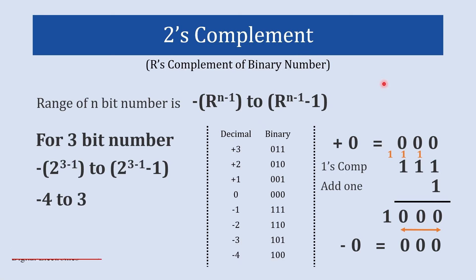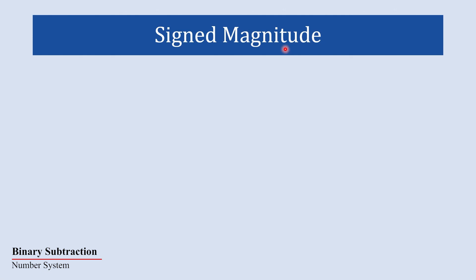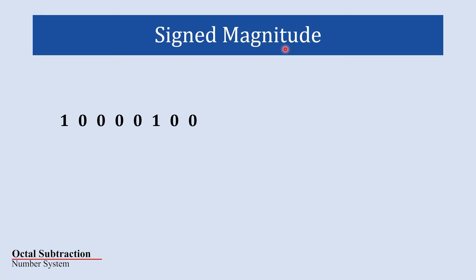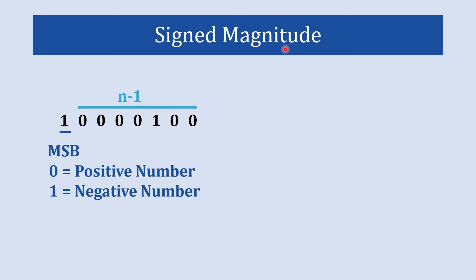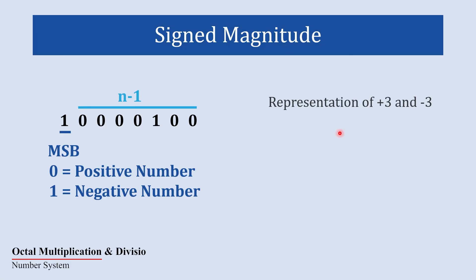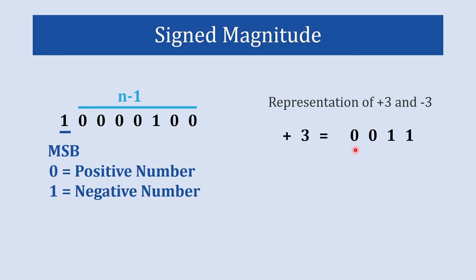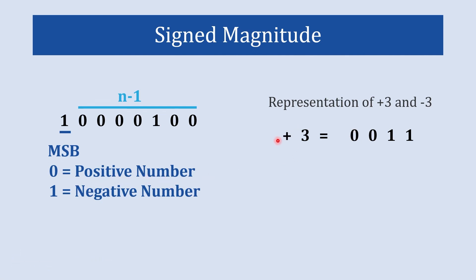This is the advantage of representing signed binary numbers using the 2's complement method, and this is the reason why 2's complement is preferred over 1's complement. Now the third method to represent signed binary numbers is the sign magnitude method. Here the sign of the number is represented using the MSB: 0 for positive and 1 for negative. The remaining n minus 1 digits represent the magnitude. For example, in a 4-bit representation positive 3 is 0 0 1 1.